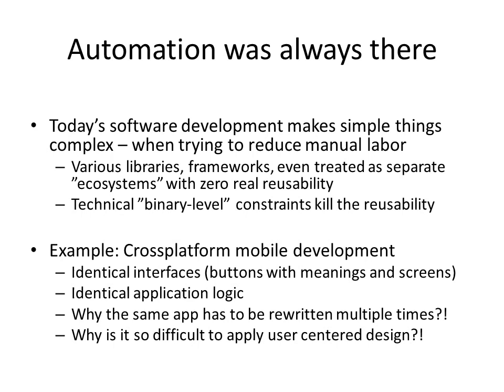Automation is actually nothing new in software development, if we look at it from a higher level view. Today's software development actually makes simple things more complex when it tries to reduce manual labor. Object-oriented programming provides certain ways to reduce code and provide what seems to be reusable, and the reusability technologies include libraries, frameworks, or even something treated as separate ecosystems — which actually still have very close to zero real reusability. The problem in reusability lies in the technical detail of not being able to combine, at the binary level, different platform compilations or even the same platform compilations from different languages.